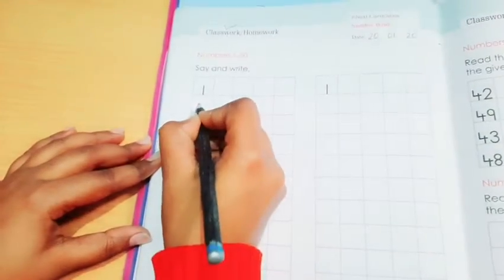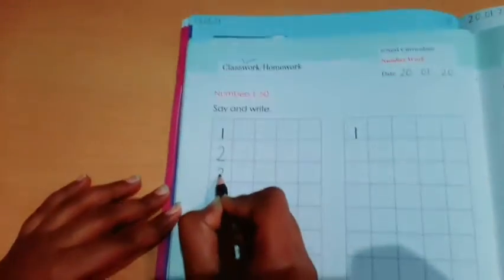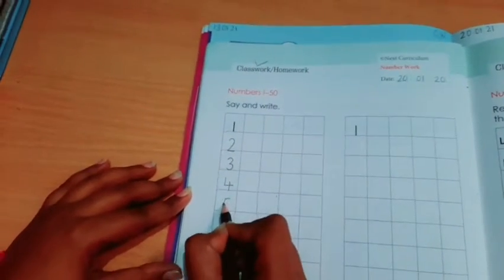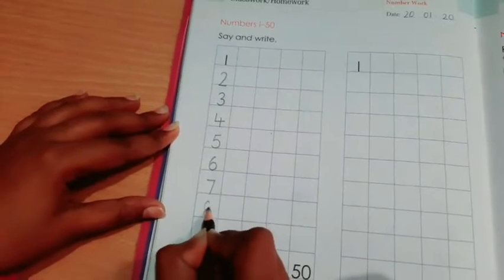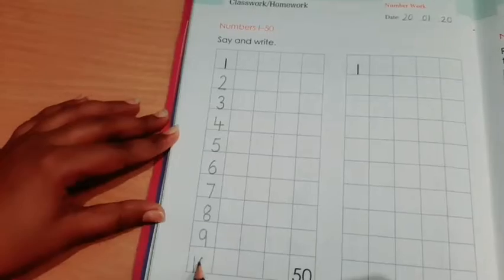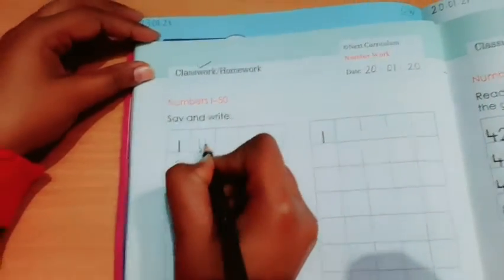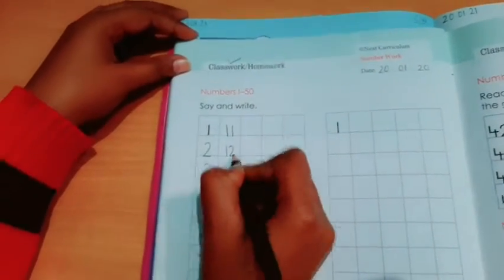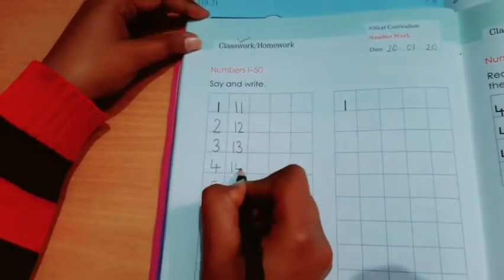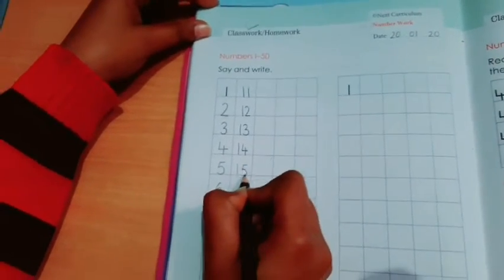Okay, so start: 1, 2, 3, 4, 5, 6, 7, 8, 9, 10. Make sure your each number should be touched to the bottom line. 11, 12, 13, 14, 15, 16, 17, 18, 19, 20.